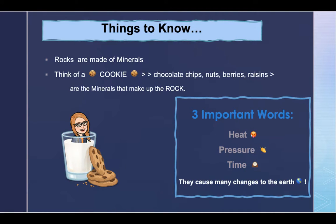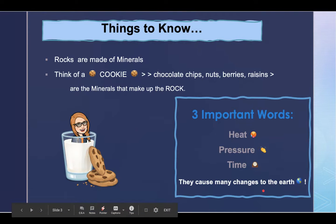Sometimes minerals are found by themselves in nature, just like a chocolate chip in a cookie can be eaten by itself. But mostly, minerals are found in rocks, and most rocks contain several different minerals at one time. Remember the three important words that Jerry the geologist has told us: heat, pressure, and time. They cause many changes to the earth.